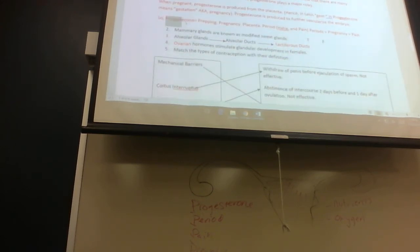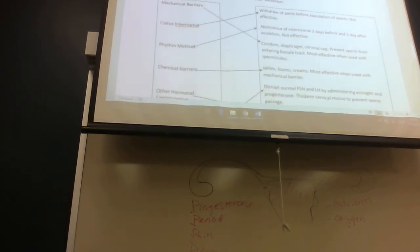Progesterone, again, prepping, pregnancy, placenta. Period, pain, pregnancy. Mammary glands, something cool about them is that they're known as modified sweat glands. So they're sweat glands, but they produce milk. This is alveolar glands to alveolar ducts to lactiferous ducts. This is the process of tracing a drop of milk going through the breast. Ovarian hormones stimulate glandular development in females. When the ovaries develop, then the glands will develop because the ovaries will be secreting hormones.